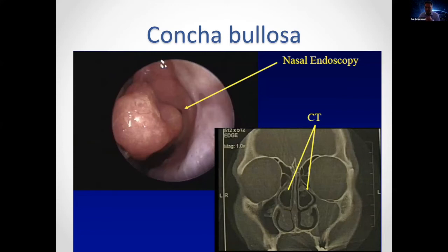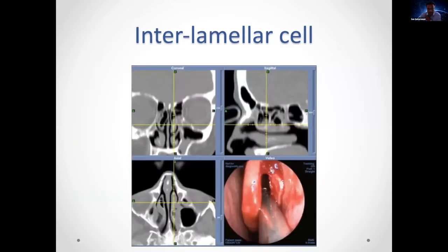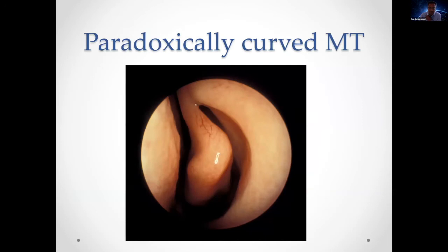Variants of the middle turbinate include the concha bullosa, where the middle turbinate itself is pneumatized — when particularly large, this obstructs surgery and requires taking down the lateral lamella to create space. If pneumatization reaches the skull base it's called an interlamellar cell. The turbinate can also be paradoxically curved, narrowing the middle meatus, which also needs to be addressed.